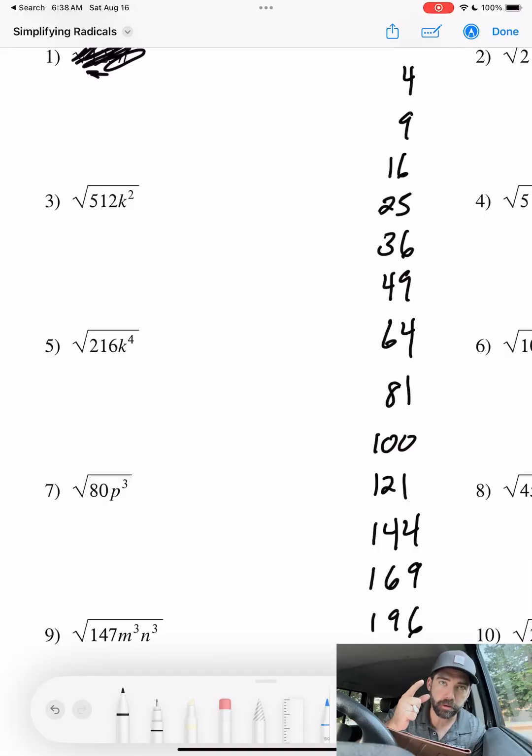Welcome back mathletes! Simplifying radicals - you need to know your perfect squares. So we got 512, is that a perfect square? I don't know. We have 1, then 4, 9, 16, 25, 36, 49, 64, 81...